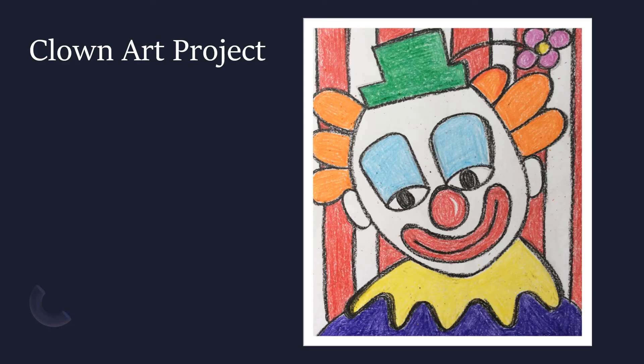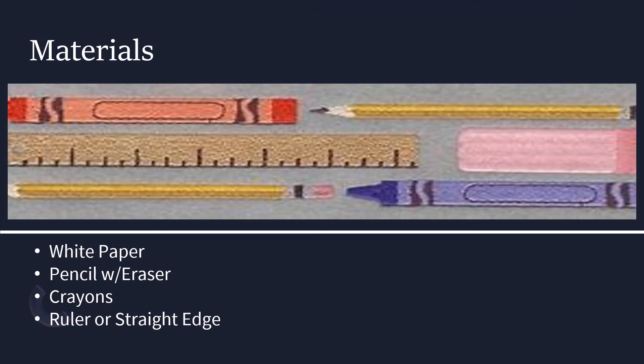Now that we've discussed the history of the circus and why artists choose to paint the circus, and we've gone over several famous examples, we're going to give it a try ourselves. Today we're going to do a directed draw of a circus clown. Materials that you will need include a piece of white paper, a pencil with an eraser, crayons including a black, and a ruler or some sort of straight edge. Go ahead and gather your materials and we'll get started.